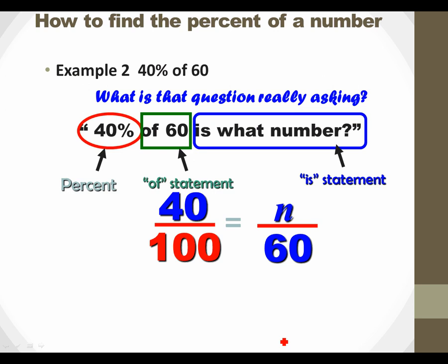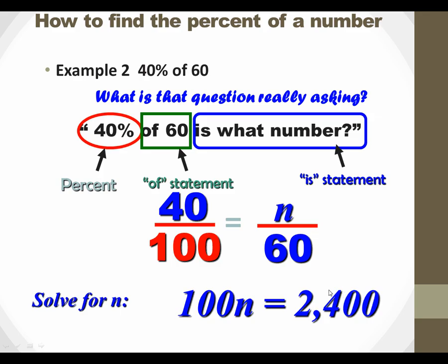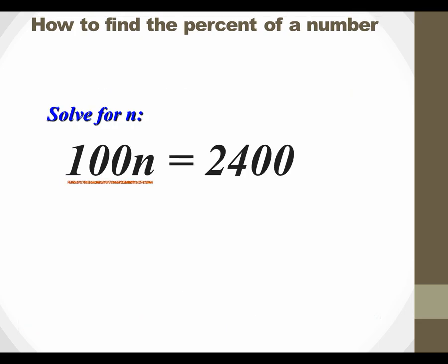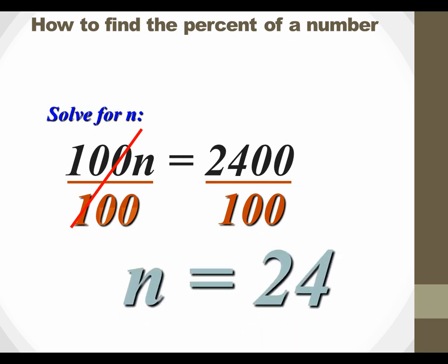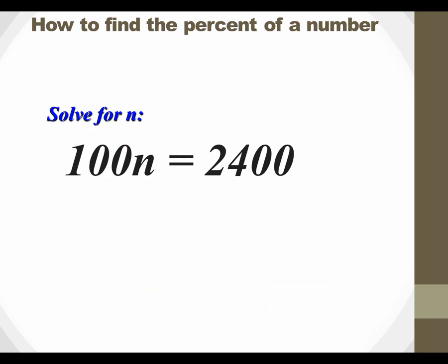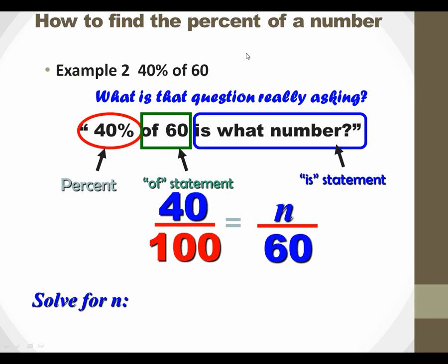So go ahead and solve it. 100 times N is 100N. And then what we're going to do is get 100N equals 2400 and then divide by 100. So I'm kind of assuming you know how to do this. N equals 24. There you go.